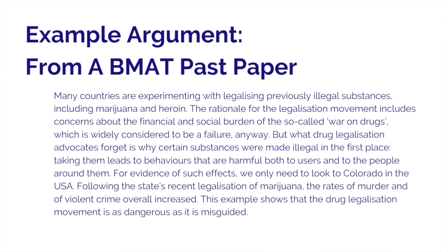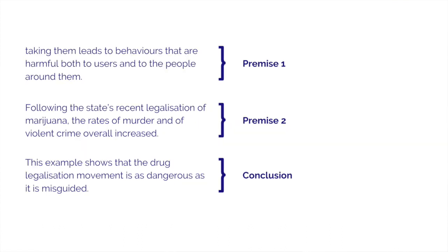Here is an example from a past BMAT exam question illustrating how premises and conclusions interlink. It reads: 'Many countries are experimenting with legalizing previously illegal substances including marijuana and heroin. The rationale includes concerns about the financial and social burden of the so-called war on drugs, widely considered a failure. But what drug legalization advocates forget is why certain substances were made illegal — taking them leads to behaviors harmful to users and people around them. For evidence, we need only look at Colorado, USA, where following legalization of marijuana the rate of murder and violent crime overall increased. This shows the drug legalization movement is as dangerous as it is misguided.' We can see several premises made by the author leading to the conclusion that drug legalization is dangerous.